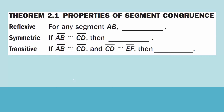Theorem 2.1, Properties of Segment Congruence. From Chapter 2, Section 4, we've already seen these theorems, which we are going to restate. Reflexive: for any segment AB, line segment AB is congruent to line segment AB. Remember from the last lesson, if two triangles share those same line segments, then we can say that the line segment on the left is congruent to the one on the right — they have the same measure.